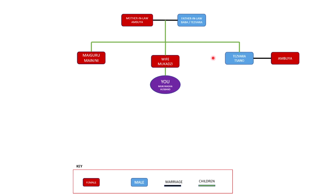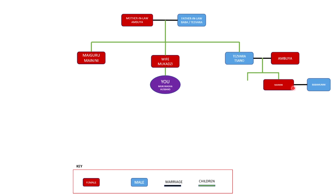Now going to the counterparts that are married to your wife's brothers — you're going to address them as Ambuya. The children coming from this marriage: if it's a female child, you're going to address her as Mainini. And the male counterparts married to the female child, you're going to address as Baba Munini.